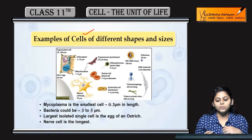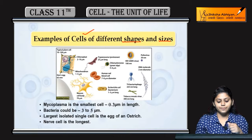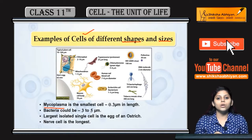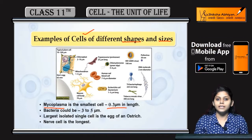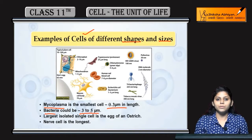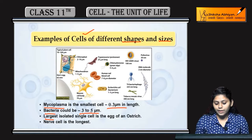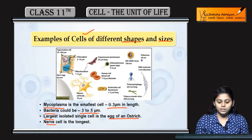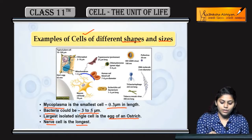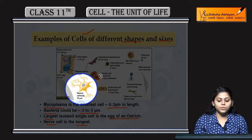Prokaryotes and eukaryotes have different shapes and sizes. Mycoplasm is the smallest cell, which is 0.3 micrometer in length. Bacteria is 3 to 5 micrometers. The largest isolated cell is the egg of an ostrich. The nerve cell is known as the longest cell, you can see here. The nerve cell, which is also known as the neuron.